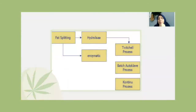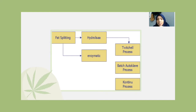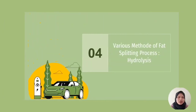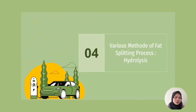As we know, fat splitting has two types of processes: hydrolysis and enzymatic. This time we are focusing on the hydrolysis process, which consists of the Twitchell process, batch autoclave process, and continuous process — which we will discuss more in the next slides. The last topic is the various methods of fat splitting by hydrolysis.